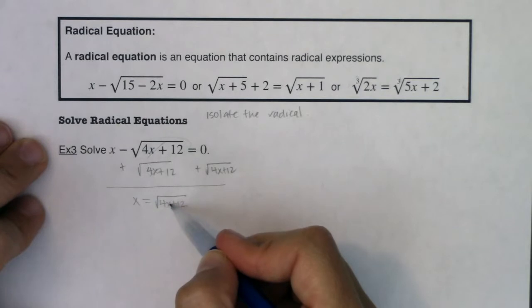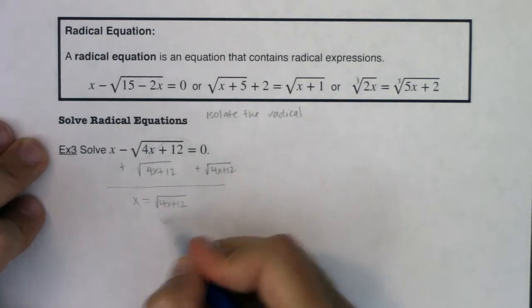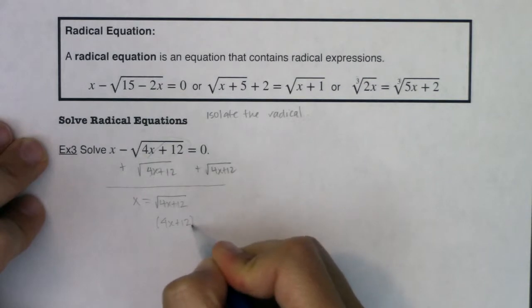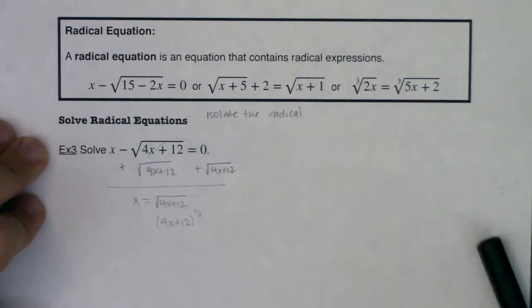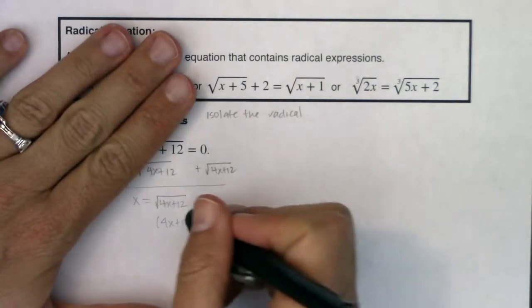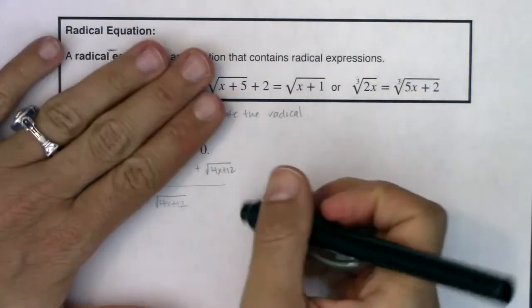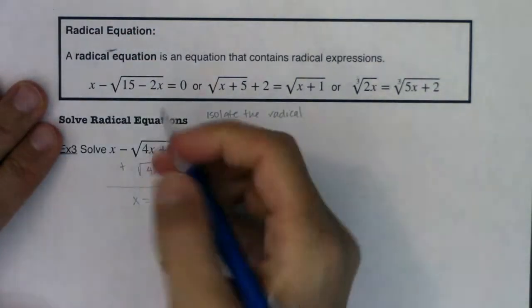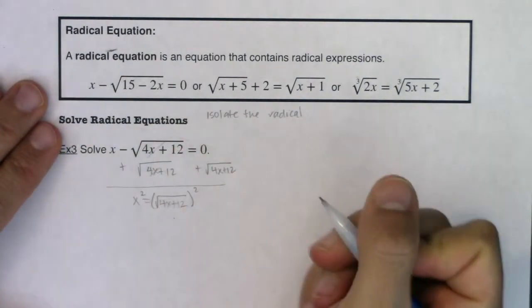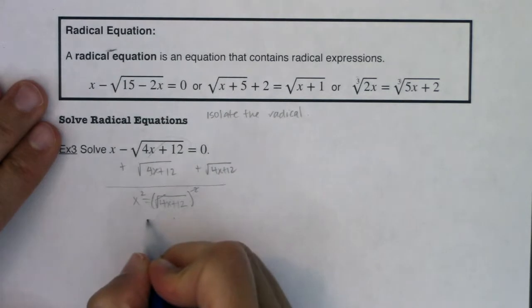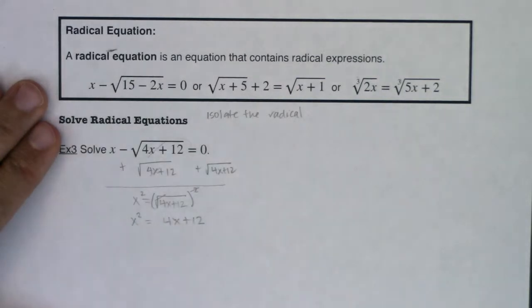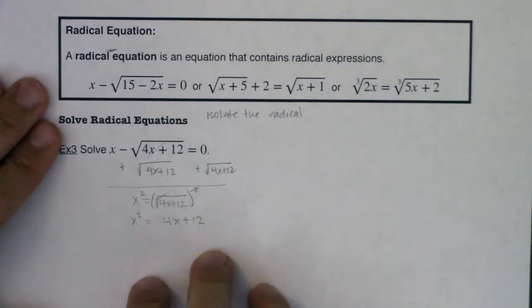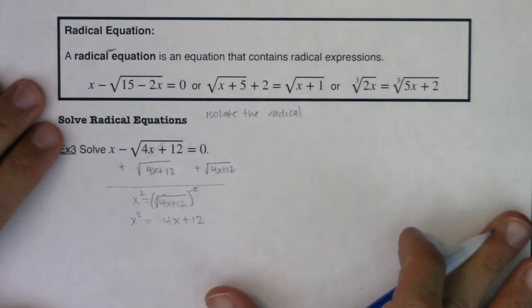Now you can rewrite this as a rational exponent if you want. You can say this, you can rewrite this as 4x plus 12 to the 1 half if you want, and use that reciprocal idea that we talked about in example one. You don't have to do that, I just want to kind of connect those ideas. But what I'll do is I'll just leave it in radical form here and say, hey, I'm going to square both sides. Now square roots and squares, those are inverse operations. So I'm just going to get 4x plus 12 on the right side and I get x squared on the left side. And you can see now I have a quadratic equation.